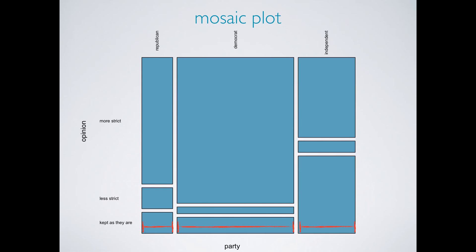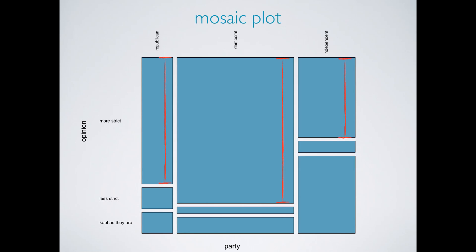Now let's look at the breakdown of the individual bars. Among the Republicans, we had seen that 75% want more strict gun laws — these respondents are represented by the first segment in the Republican bar. Similarly, 86% of Democrats and 47% of Independents who want more strict gun laws are represented in the first segment within their respective bars. Visually, without relying on the relative percentages we calculated earlier, we can see that the length of the segments representing those who want more strict gun laws vary by party affiliation, indicating a difference in opinion among members of different parties, hence suggesting a relationship between opinion on gun laws and party affiliation.